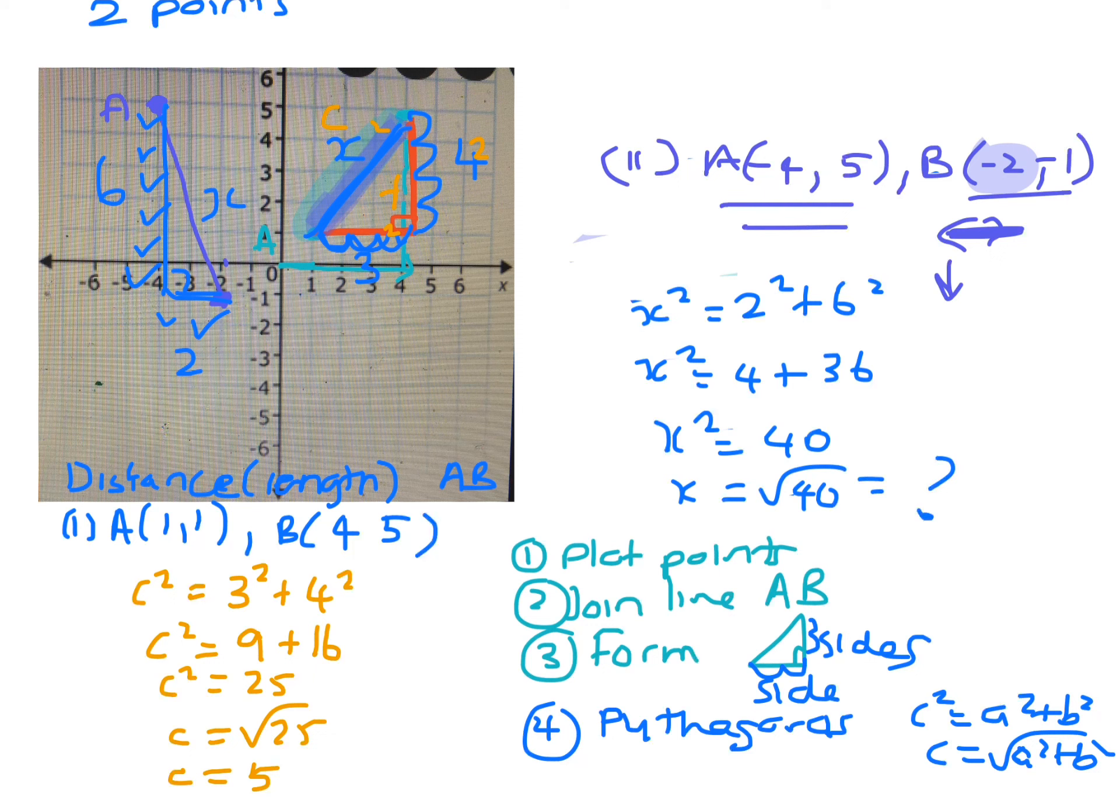You can put in your calculator and get it as a decimal. You can leave it in exact form as root 40. Now what you should do is go and try some other ones on the slide.